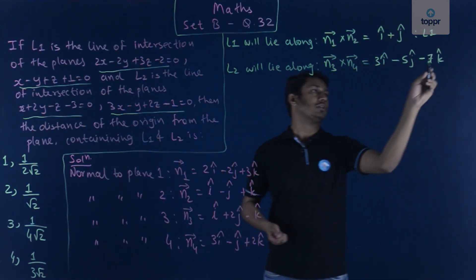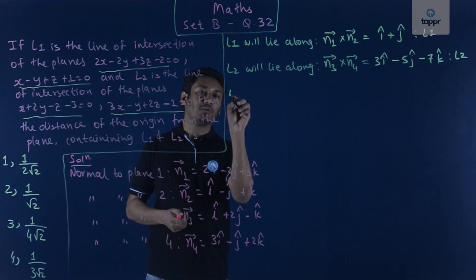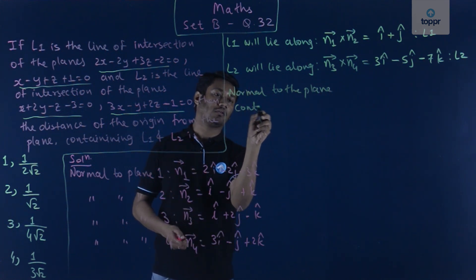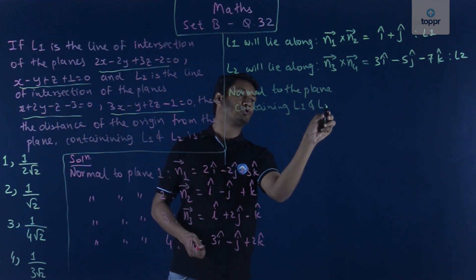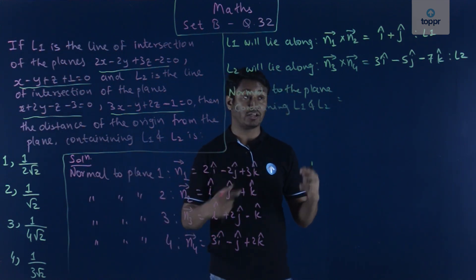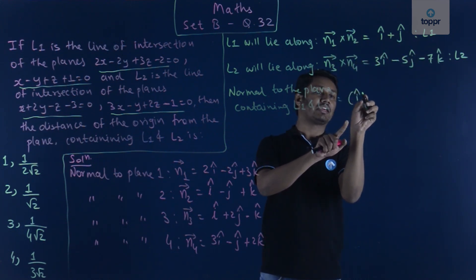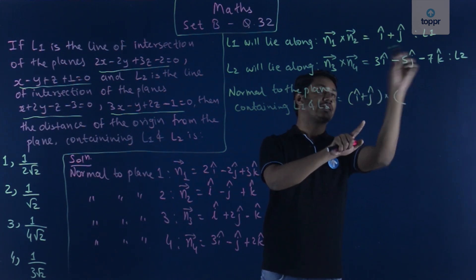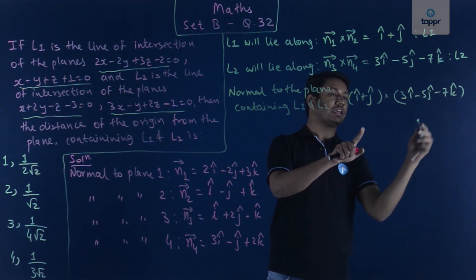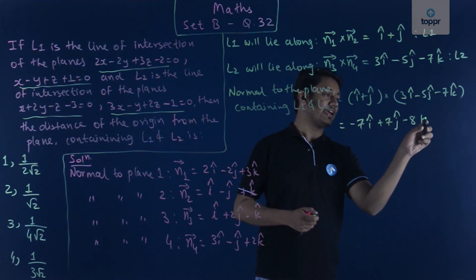Now we find the normal to the plane containing both L1 and L2 by taking the cross product of the two direction vectors: (i + j) × (3i − 5j − 7k). This gives −7i + 7j − 8k, which is the normal to the required plane.